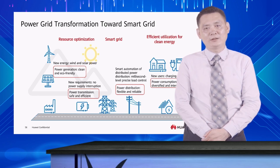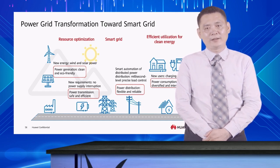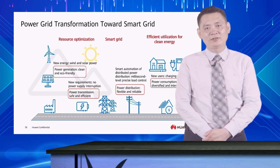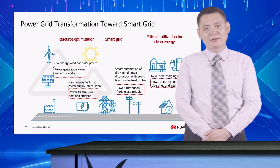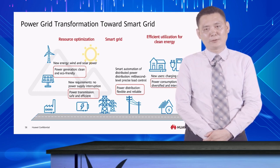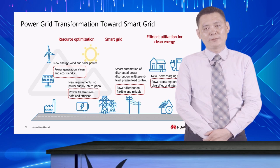Moreover, smart automation of distributed power distribution and millisecond-level precise load control will pose higher requirements on networks, such as low latency and higher reliability. There will also be more and more new types of use cases, such as charging piles in big cities and highway service areas. Another use case is diversified interactive power consumption — the redundant electricity generated by home solar panels can be sold back to the power grid, making the power transmission network bidirectional.